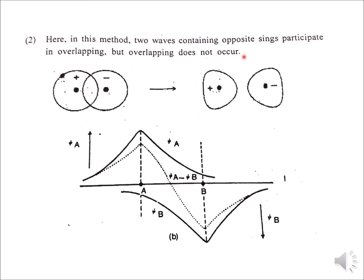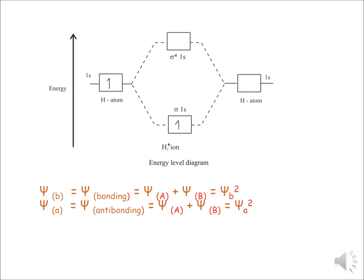This is an example of the formation of an anti-bonding molecular orbital. The wave function of H_a and H+ overlap but they are not in the same phase, so they do not share a common area. This overlapping is called destructive overlapping. In destructive overlapping the energy is higher and the anti-bonding molecular orbital forms.